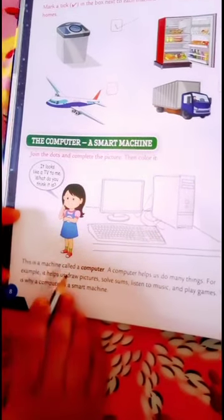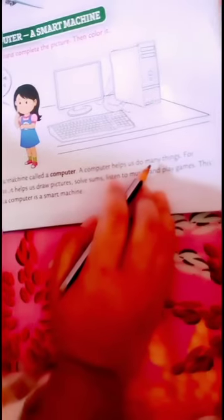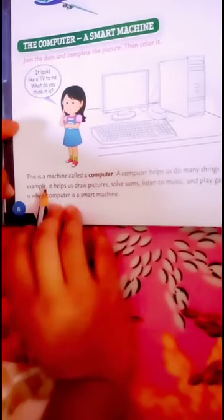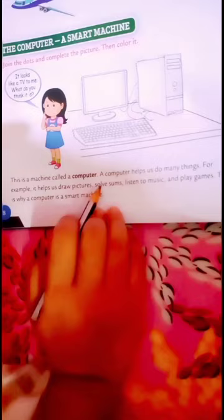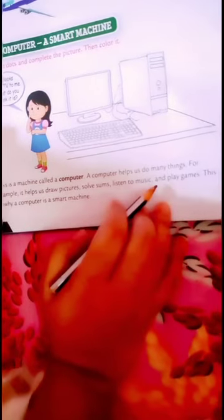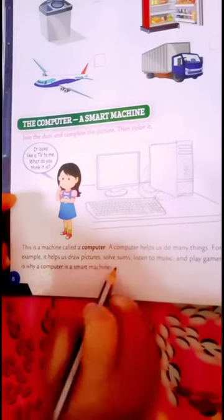This is a machine called a computer. A computer helps us do many things. For example, it helps us draw pictures, solve sums, listen to music, and play games. This is why a computer is also a smart machine.